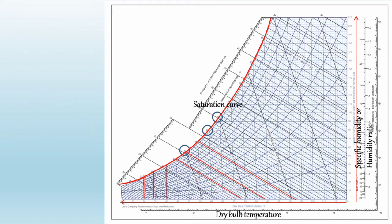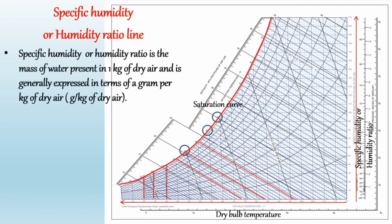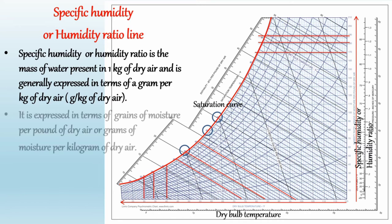The next line is the specific humidity or humidity ratio line. Humidity ratio, or specific humidity, is the mass of water present in 1 kilogram of dry air, and is generally expressed in grams per kilogram of dry air. In the psychometric chart, the specific humidity lines are horizontal — parallel to the x-axis up to the saturation curve — and are uniformly spaced. It is expressed in terms of grains of moisture per pound of dry air, or grams of moisture per kilogram of dry air.